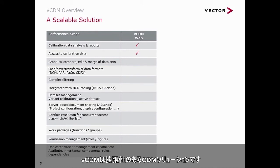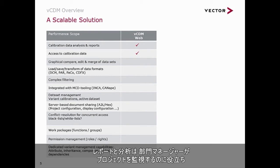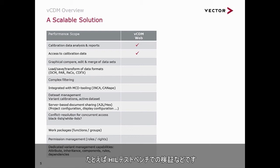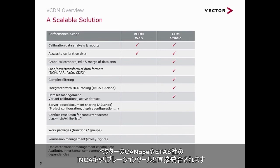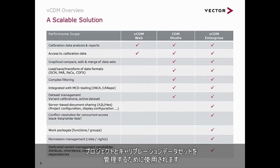VCDM is a scalable CDM solution. The web client offers browser-based access to calibration information. Reports and analysis can help department managers to monitor projects, and neighboring departments can access released calibrations — for instance, for a validation at a HIL test bench. CDM Studio is a powerful calibration editor for all calibration data in all typical formats, directly integrated with calibration tools such as Vector CANape and ETAS INCA and with VCDM. The VCDM client application grants access to central calibration data and is used to manage projects and calibration datasets.